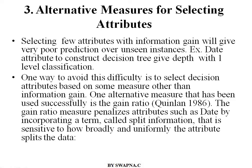For example, if there is a date attribute in the dataset to construct the decision tree, if you take the date attribute, it has more information gain. We can take it as the root for the decision tree, and we will get a depth-1 level classification perfectly. But when applying to unseen instances, you will get very poor performance. To avoid that, what alternative measures are there to select the attributes?